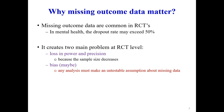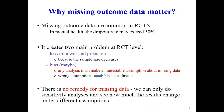We have to make some assumptions about the missing data, and the validity of results will depend on the plausibility of these assumptions. If we make wrong assumptions, we are likely to get biased estimates. We do not consider that there is any remedy for missing data — what we can do is sensitivity analysis, making assumptions and seeing how robust the results are.